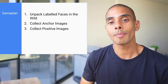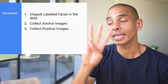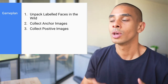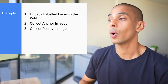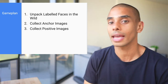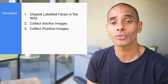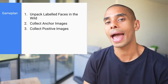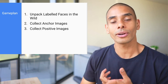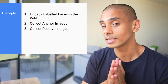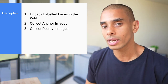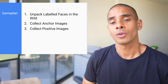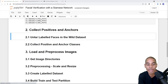In part two we're going to focus on getting our data. Remember from part one, we needed three different types of data: negative images, anchor images, and positive images. To collect our negative images we're going to be leveraging a standard facial image repository called Labeled Faces in the Wild. We'll download and unpack it into the structure we need. We'll also collect our anchor and positive images using OpenCV with a webcam, though you can use phone images too.